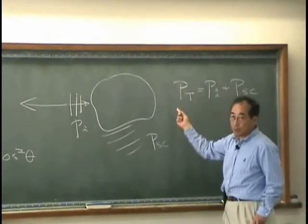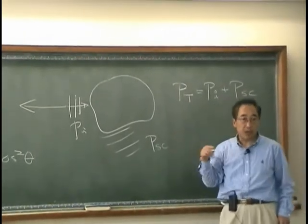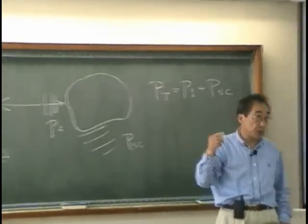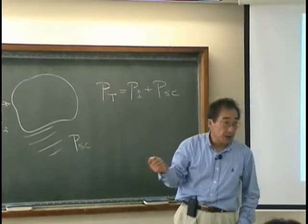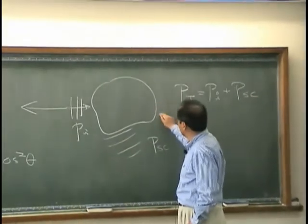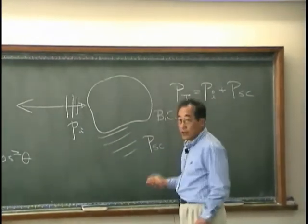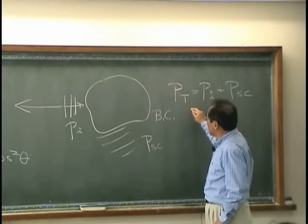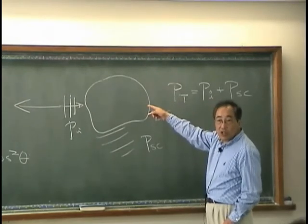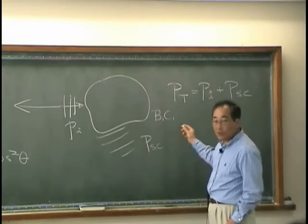So we can write that the total pressure field is PI times PF to C. In other words, total pressure field will be composed by an incident pressure field as well as a scattered pressure field.